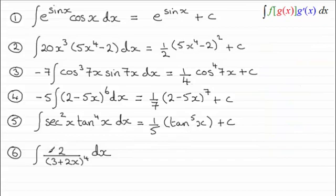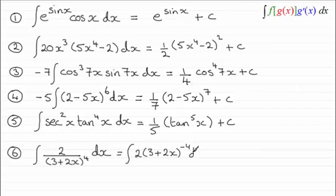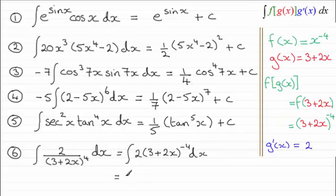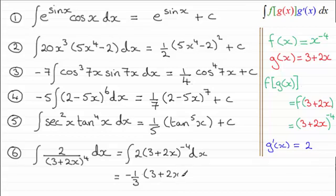With this last one, this is just to demonstrate the fraction idea. I can rewrite this as the integral of 2 times (3 plus 2x) all to the power minus 4, integrated with respect to x. Integrating x to the power minus 4 gives minus 1/3 x to the power minus 3. Replacing x with g(x), which is 3 plus 2x, gives (3 plus 2x) to the power minus 3, plus the constant of integration, c. You might also prefer to write this as minus 1 over 3(3 plus 2x)³.